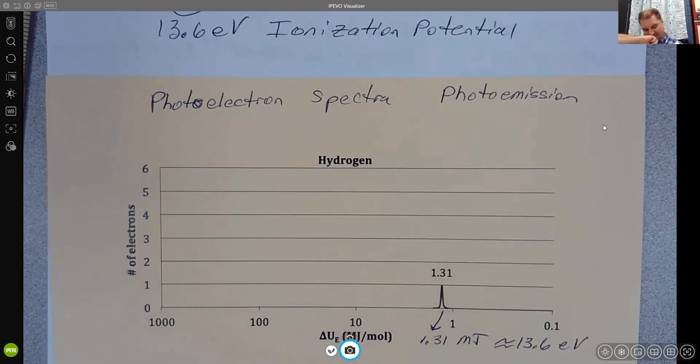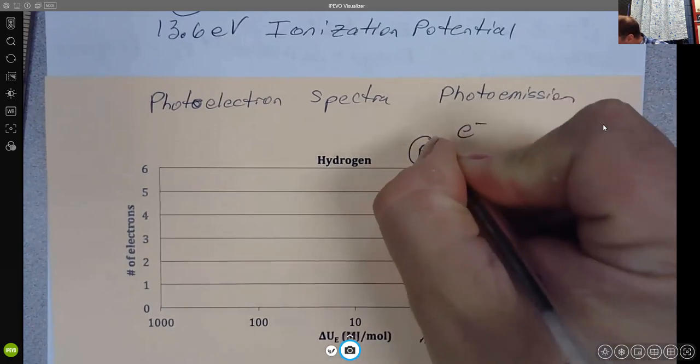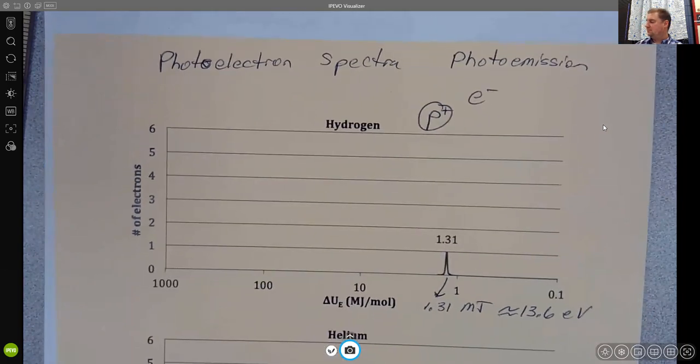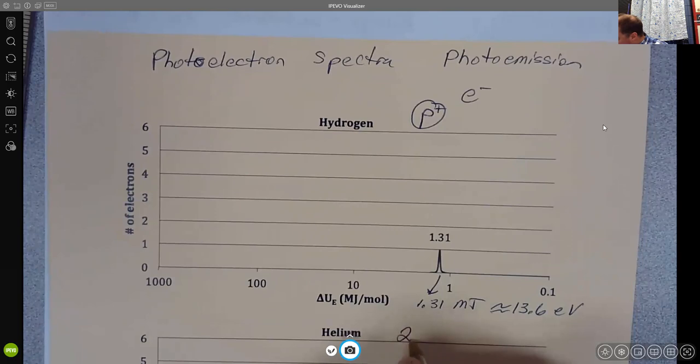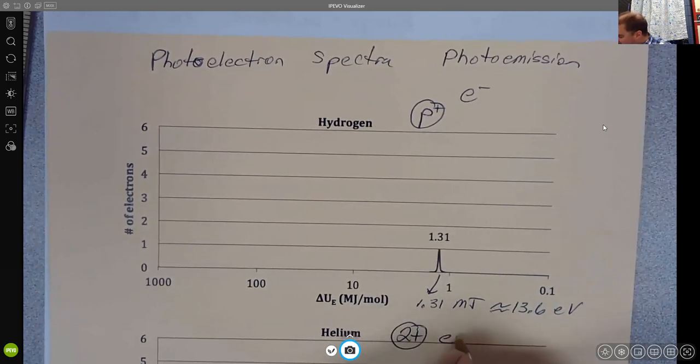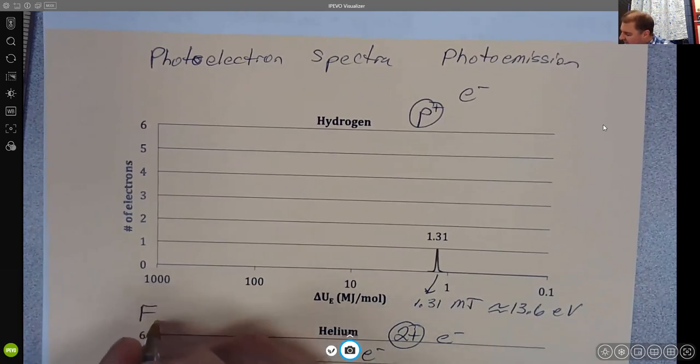What's going to happen as we go up to helium? What changes about the atom? Hydrogen had a proton in the nucleus and an electron somewhere outside of that. In helium, we're going to have two protons, and somewhere outside of that nucleus, we're now going to have two electrons.